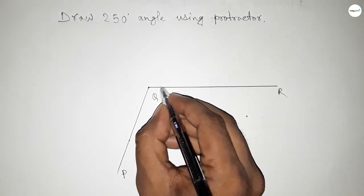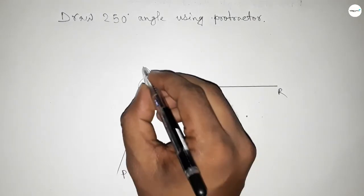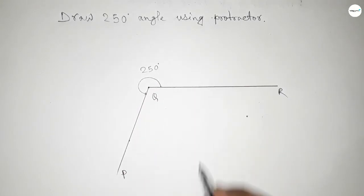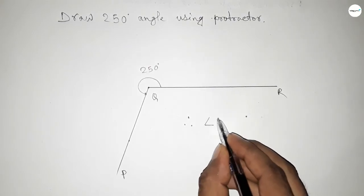This is PQR, so this is 250 degrees. Angle PQR equals 250 degrees. Therefore, angle PQR equals 250 degrees.